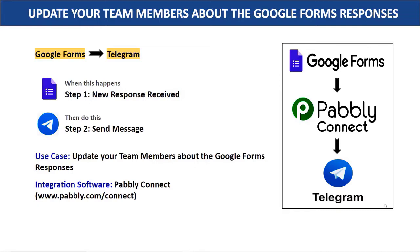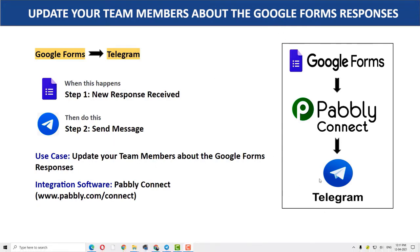Here I am going to do this process by integrating two software: Google Forms and Telegram. So that whenever a new response is received in Google Forms, it will be automatically sent as a new message on Telegram. But there is one issue — both Google Forms and Telegram do not have any sort of direct integration between them.